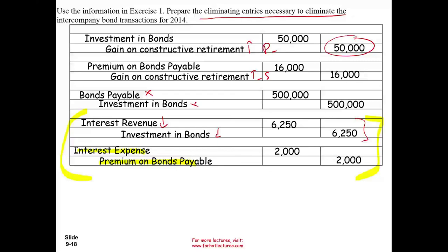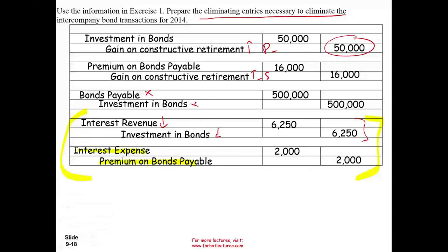If you're having difficulty with this topic, it may be because you don't have the prerequisite. Go back to my intermediate accounting chapter 14 where I cover bonds in depth. Bonds are heavily covered on the CPA exam, so you need to understand how bonds work. This advanced accounting chapter assumes you have mastered intermediate accounting. If that's not the case, go back and take care of it.